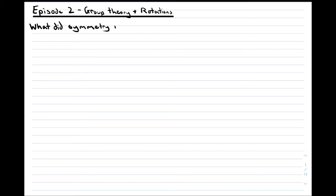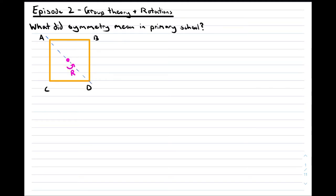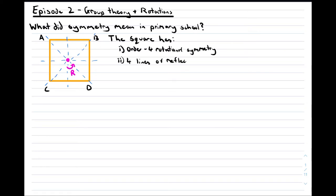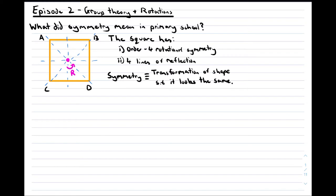We will then bring it down to earth by taking a close look at rotations. To that end we ask the very simple question: what did symmetry mean to us in primary school? In school we all studied symmetries by thinking about shapes. For example, consider the image of a square on the screen. In school we would say the square has order four rotational symmetry and four lines of reflection. We implicitly understood a symmetry as a transformation of the square after which it looked unchanged — this is exactly what a symmetry transformation is even in quantum physics. We're going to argue there are four fundamental properties that symmetries possess.